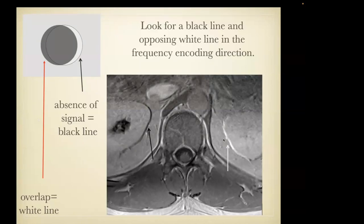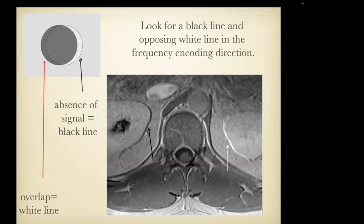If you look on this image, you'll see around the kidneys, which are surrounded by retroperitoneal fat, there's a white line on one side of the kidney and a black line on the other side. This is a reflection of chemical shift. The misregistration between fat and water means that on one side there is an area where we get no signal — the black area — and on the other side there is doubling of signal from both the fat and the kidney, giving high signal intensity.